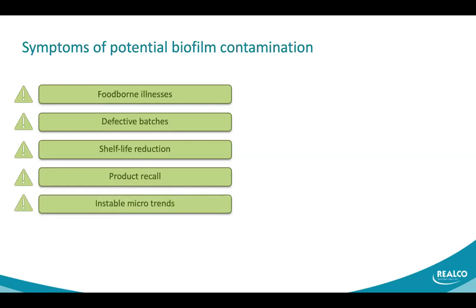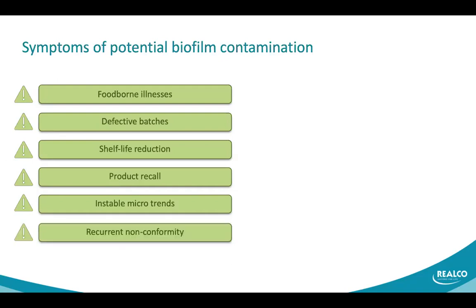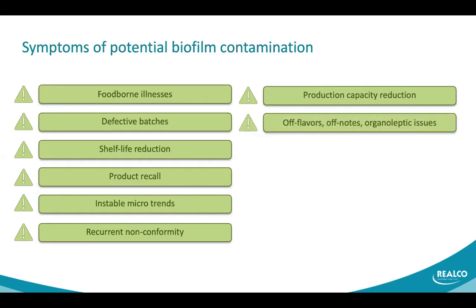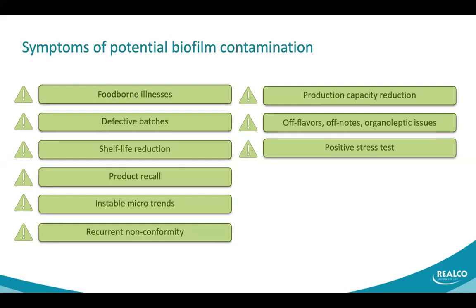Unstable micro trends — if microbiological trends show peaks of contamination from time to time that you cannot link to a production incident or a defective batch of raw materials, the reason can be a biofilm in the equipment. Non-conformity, same production capacity reduction — for specific equipment like membrane filtration or heat exchangers, you can have reduction of production capacity. Off-flavors and odors are also symptoms of biofilm contamination. Positive stress test results can also be linked with germs that are present in the product but should not be.